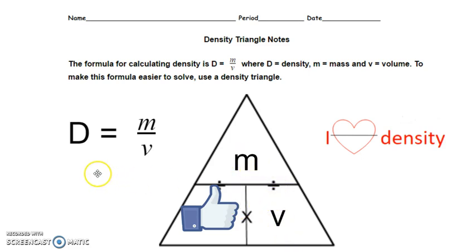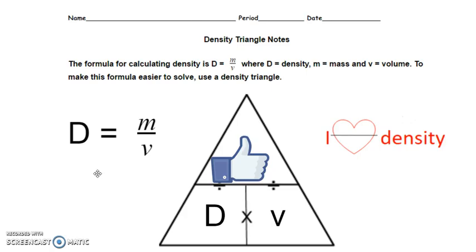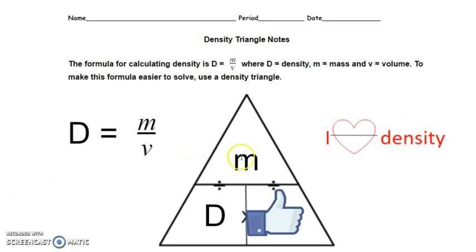Now what if you're trying to find mass? Cover up the M with your thumb — go ahead and do this on your paper. When you cover up the M, you're left with density times volume on the bottom. They're side by side, so you multiply them. And if you're trying to find volume, cover up the V with your thumb and you're left with mass divided by density — they're top and bottom, so you divide.